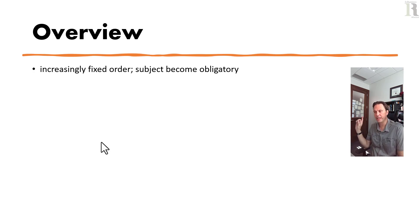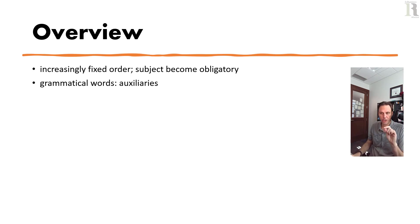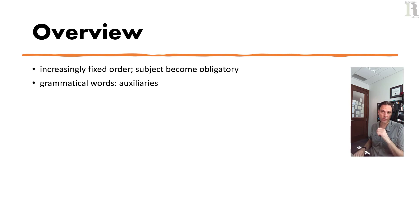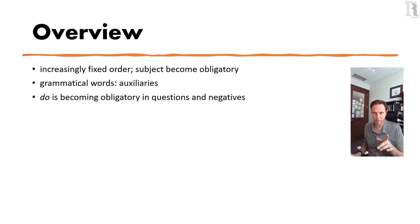Subjects become increasingly obligatory. Another big story about early modern English development is the increasing use of what are called grammatical words — also called auxiliaries, or helper verbs in K-12 English language arts. These become part of the language in a systematic way and are extensively used in the early modern English period, though not yet identical to how they're used in present-day English. Also, the helper verb 'do' becomes increasingly obligatory in questions and negatives.